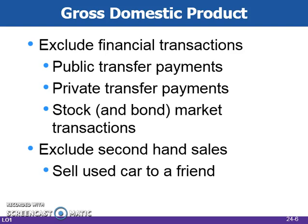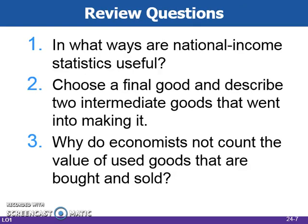Non-production transactions must be excluded from GDP as well, since they have nothing to do with the production of final goods. There are two types: purely financial transactions and second-hand sales. Purely financial transactions include such items as public transfer payments like Social Security, private transfer payments like money in a birthday card, and stock market transactions — none of these are counted in GDP. Second-hand sales contribute nothing to current production, so they are ignored in calculating GDP.